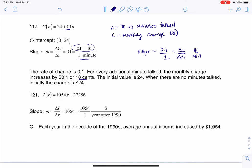They also ask you to interpret your initial value. Well, your initial value is your Y intercept, and keep in mind you always find a Y intercept. It's always 0 comma 24.